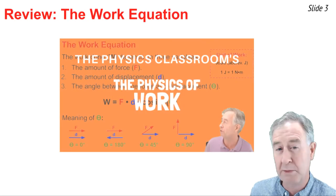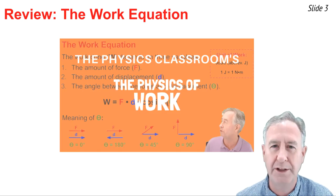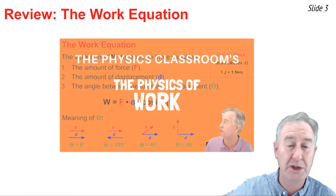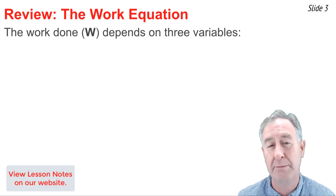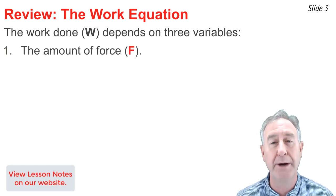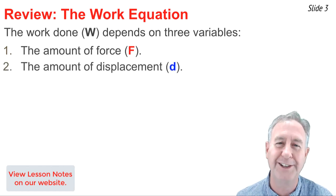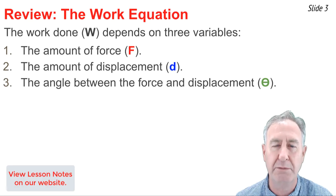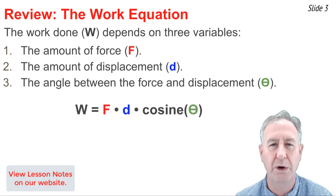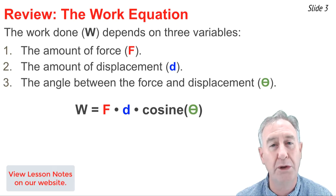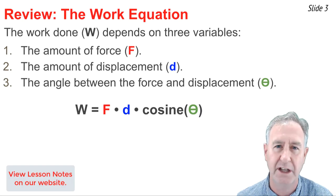In a previous video I discussed the concept and mathematics of work. If you need to review it, you'll find a link to it in the description section below. One thing we learned is that the amount of work done by a force upon an object depends upon the amount of force acting on the object, the amount of displacement the object experiences, and the angle between the force vector and the displacement vector, which we call the angle theta. The equation for work is: work equals the force multiplied by the displacement multiplied by the cosine of the angle theta between F and D.